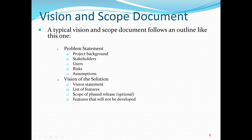A typical vision and scope document follows an outline like the following. First, we have the problem statement, which may include the project background, a list of all stakeholders, the users, risks involved, and assumptions. Then the vision of the solution includes a vision statement, a list of features needed to achieve the vision, the scope of the phase release as an option, and features that will not be developed.